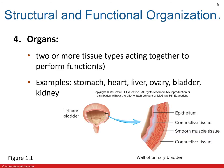An organ is composed of two or more tissue types that together perform one or more common functions. As tissues come together, they form organs — examples of which are your stomach, liver, heart, ovary, bladder, and kidneys.